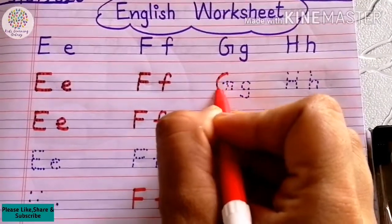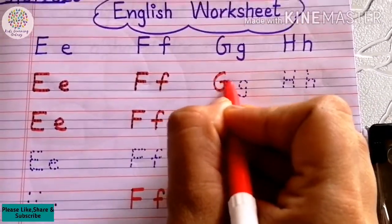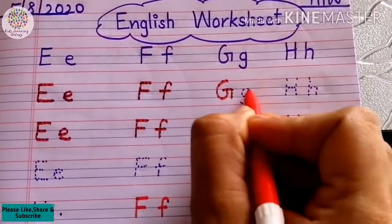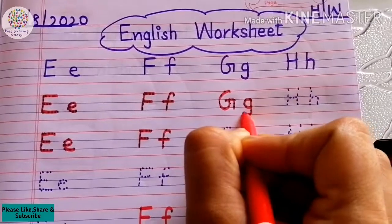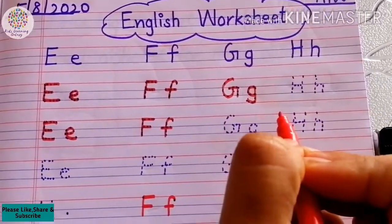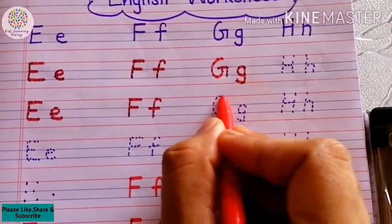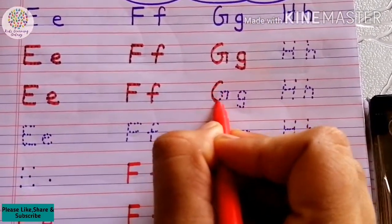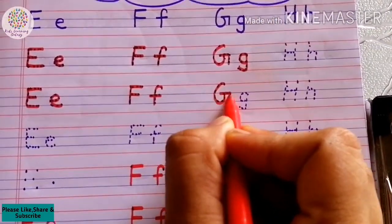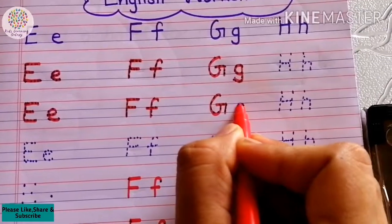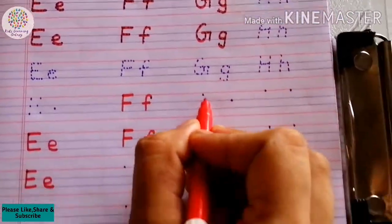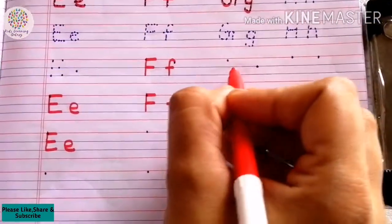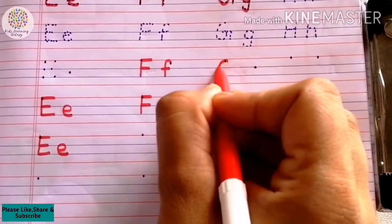Mama G is capital G and Baby G is small g. Now come to the single dot.